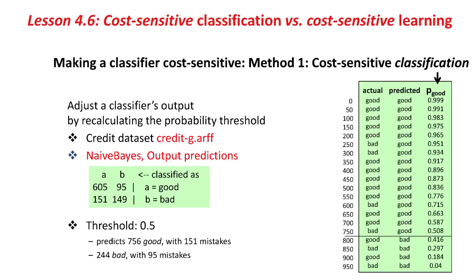So going back to that little classified-as matrix, the confusion matrix, 605 plus 151, that's 756 instances are going to be classified as good, and 95 plus 149, that's 154, I guess, are going to be classified as bad.